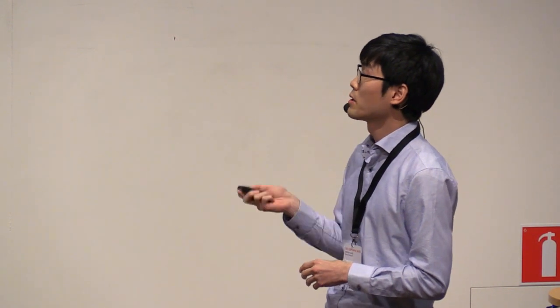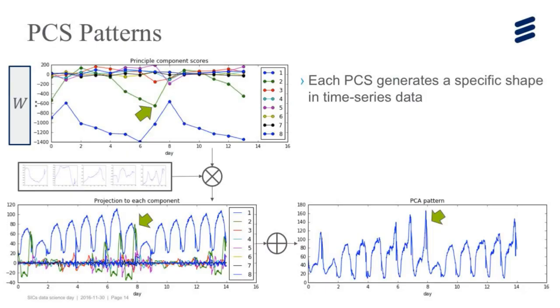Here we observe one interesting thing: each PCS generates a specific shape in time series data. For example, component one, the blue component, generates up and down pattern in day. And more interestingly, component two: the large absolute value in the PCS for component two generates a peak in the evening.